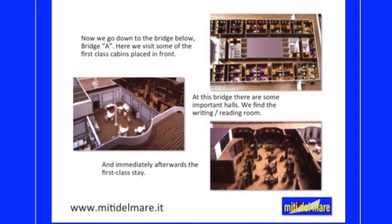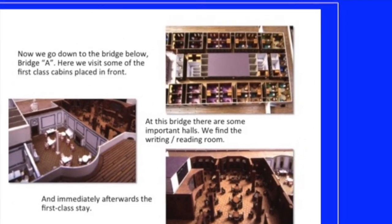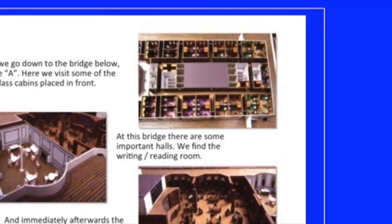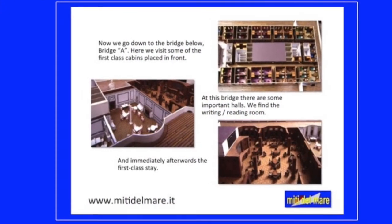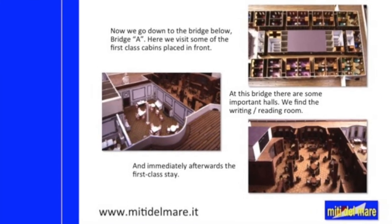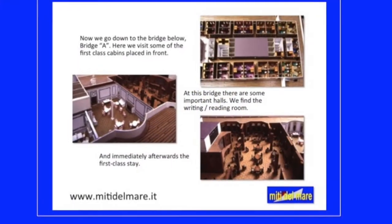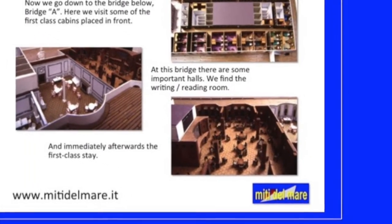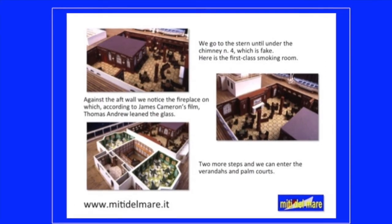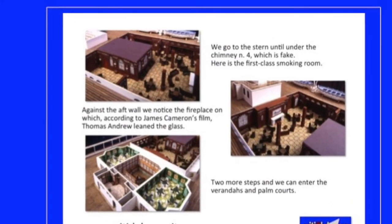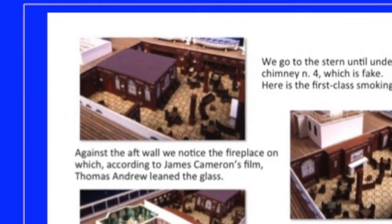Now we go down to the deck below, Bridge A. Here we visit some of the first class cabins placed at the front. At this deck there are some important halls. We find the writing and reading room, and immediately afterwards the first class lounge. We go to the stern, under chimney number 4, which is a fake. Here is the first class smoking room.